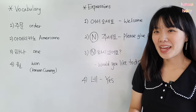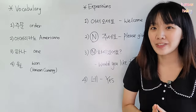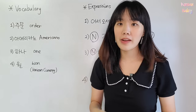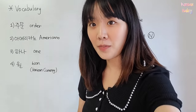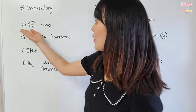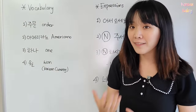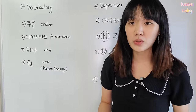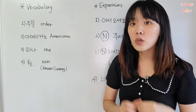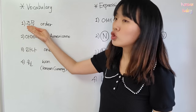Okay, 친구들. So I came back with the vocabulary and expression that you have to know beforehand. So first of all, vocabulary. Let's start with the vocabulary. So first of all, 주문. Order. You have to order something when you go to the restaurant or when you go to the cafe, right? When you have to order, order is 주문.